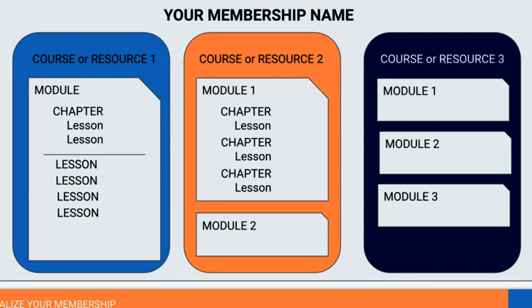When you think about the course or the resource — the reason I'm talking about them differently is sometimes what you're delivering is not a course. A course tends to be step one, step two, step three, lesson four, lesson five — it's very linear. Resources could be just a list of replays. One of the things you can put inside a membership is a resource — it's not a course, it's just a resource that has all of the replays for the last six months or whatever. That's why I talk about the things differently.